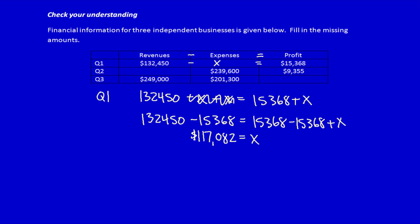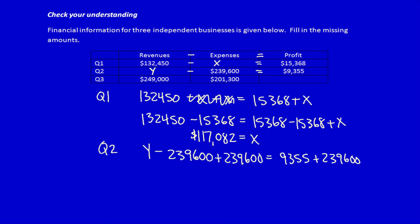This is just a matter of manipulating the equation. Let's solve for y. That eliminates the $239,600 from the left-hand side. Y is therefore equal to $248,955.